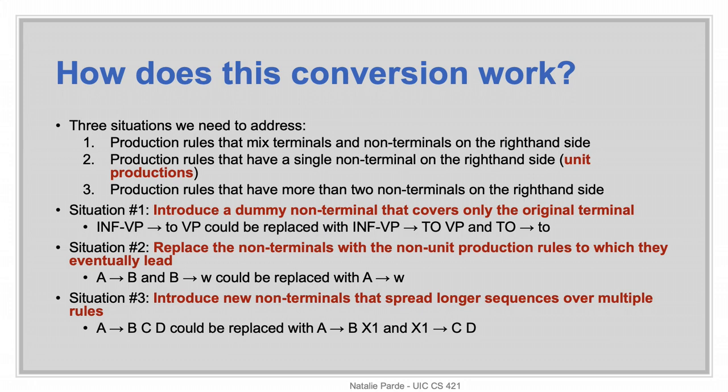Second, we need to address cases where the production rule has a single non-terminal on the right-hand side, because Chomsky Normal Form doesn't allow it — non-terminals need to be in pairs. And third, we need to address cases where the production rule has more than two non-terminals on the right-hand side, because there need to be exactly two non-terminals.